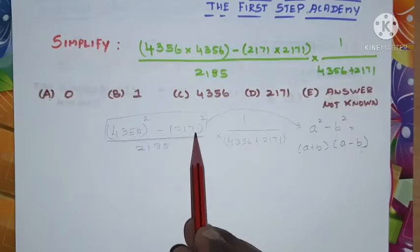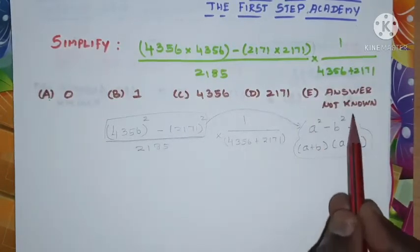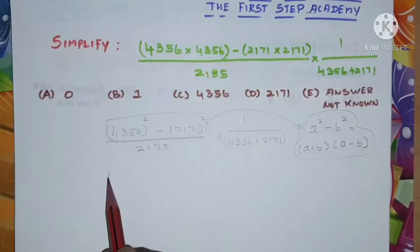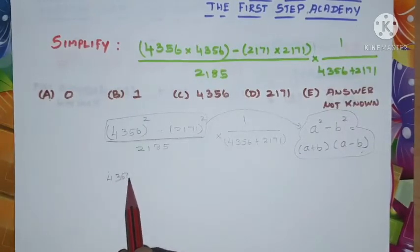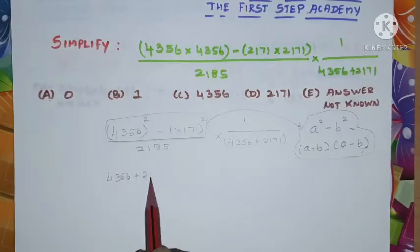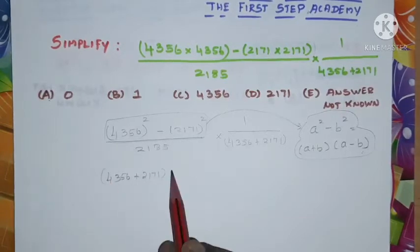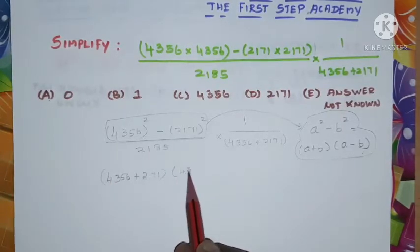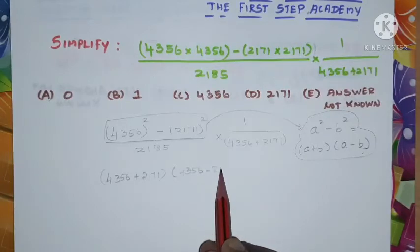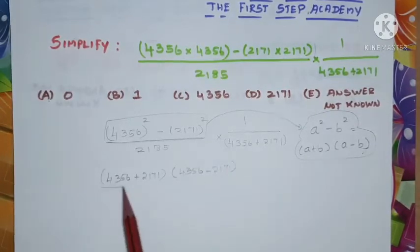Hence, (4356 + 2171) into (4356 - 2171) divided by 2185 into 1 divided by (4356 + 2171).